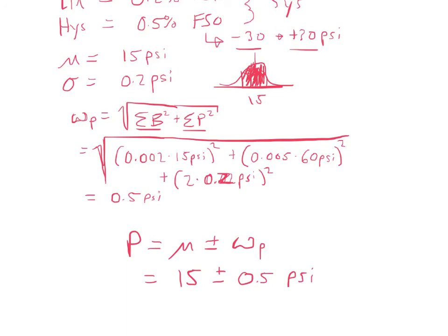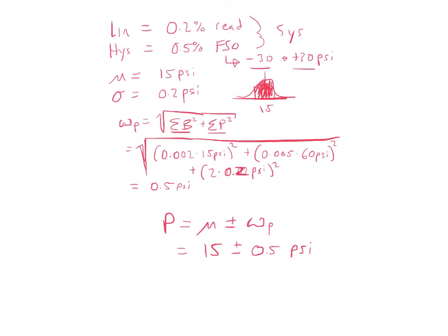So, that's a short example on how to combine the uncertainties of an independent measurement.